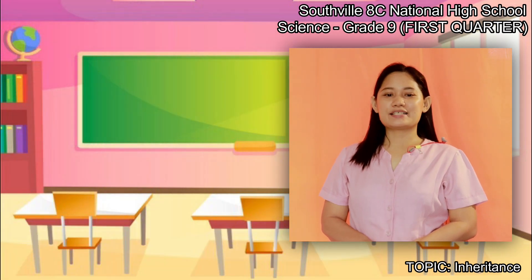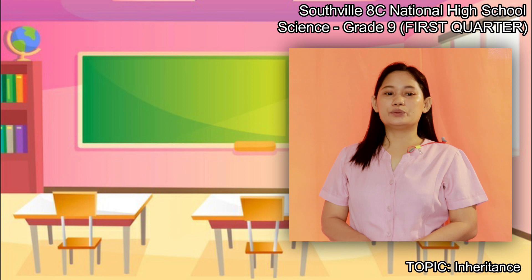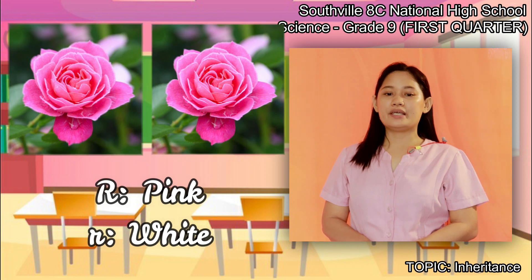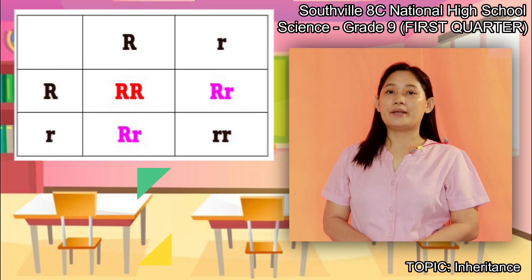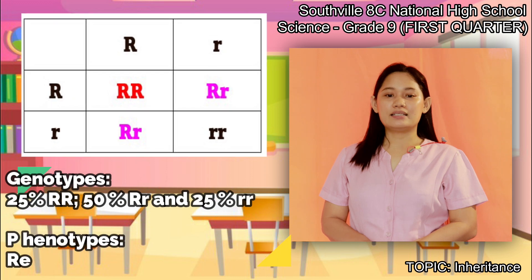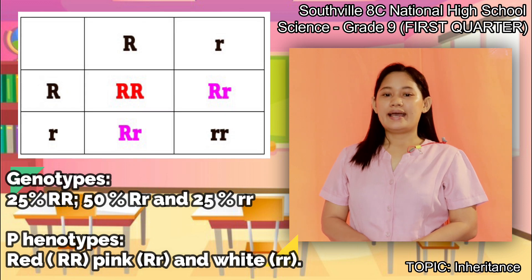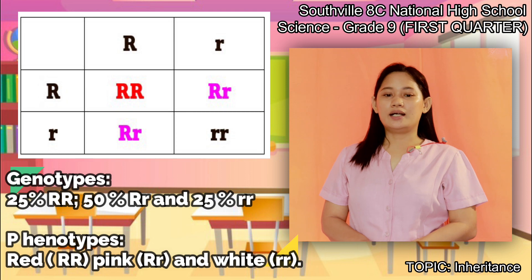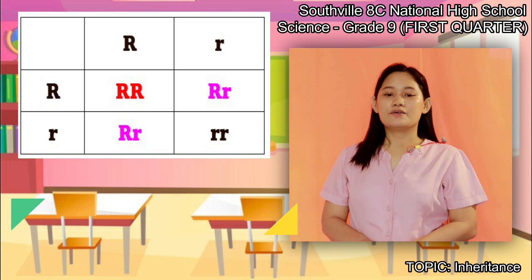Let's have another example of incomplete dominance pattern of inheritance: a cross between two pink flowers. We are going to use big R and small r for the alleles of the pink flower. Based on the cross, the probability of offspring genotypes are 25% RR, 50% Rr, and 25% rr. The possible phenotypes are red for RR, pink for Rr, and white for rr.